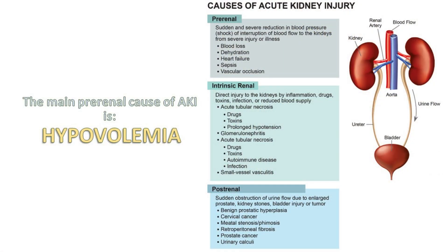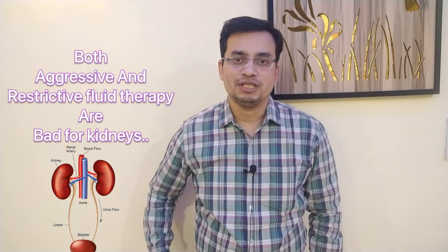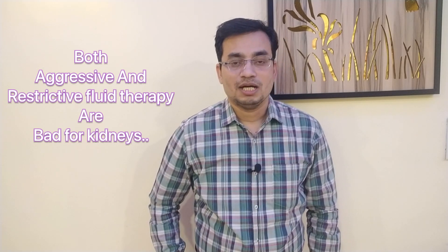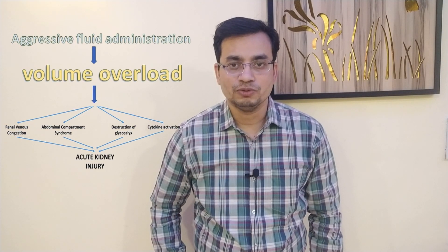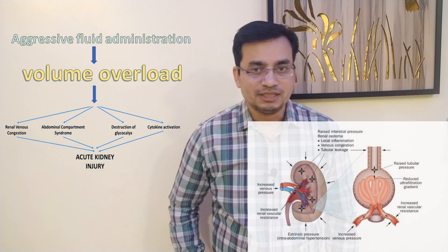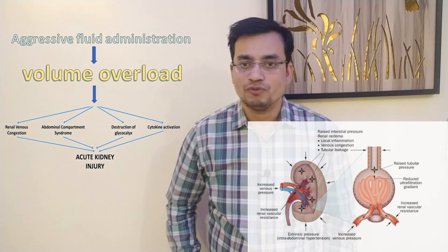The main pre-renal cause of AKI is hypovolemia. In most cases of AKI, dehydration is the main reason. Therefore, adequate volume replacement is of paramount importance. But do not be too aggressive in fluid replacement, because both liberal and restrictive fluid therapy in ICU are deleterious and can develop acute kidney injury. It has been proven that volume overload can cause renal congestion, which is no way good for the kidney's health — it definitely worsens kidney function over time. Therefore, euvolemic fluid administration is the key to management.